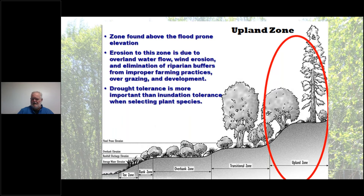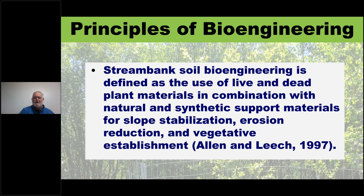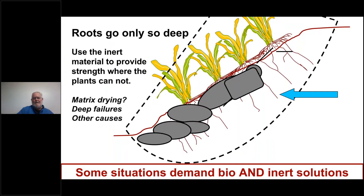Plants in the upland zone are going to be drought-tolerant. Stream bank soil bioengineering is defined as the use of live and dead plant materials in combination with natural and synthetic support materials for slope stabilization, erosion reduction, and vegetation establishment. This definition from 1997 has been used extensively throughout the literature and says pretty much everything you need to know about bioengineering.